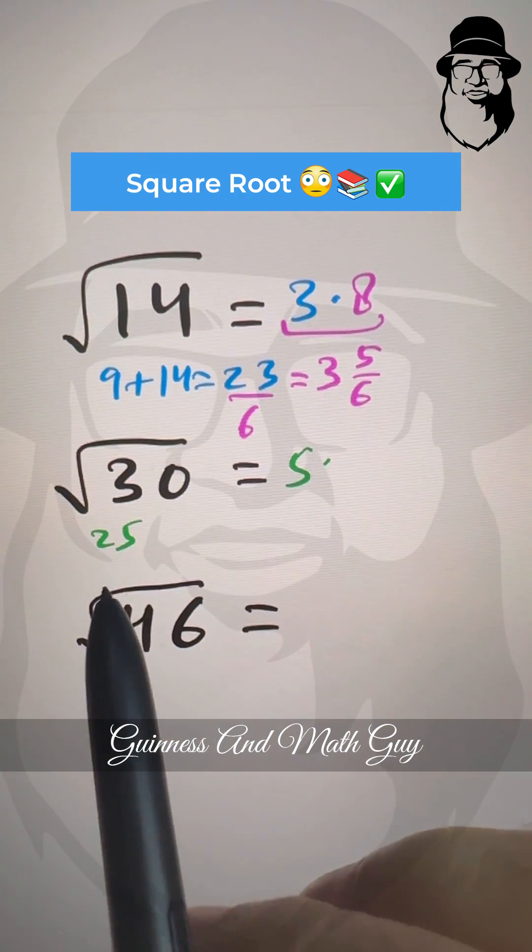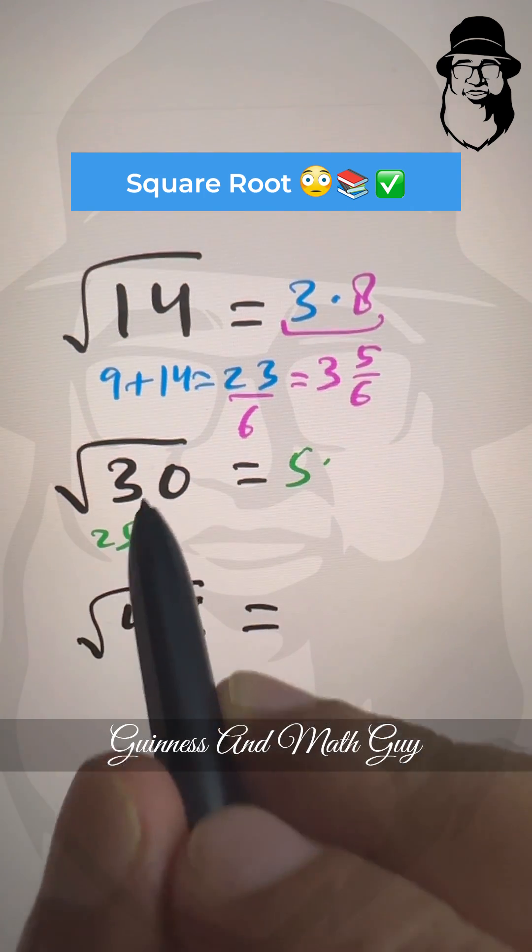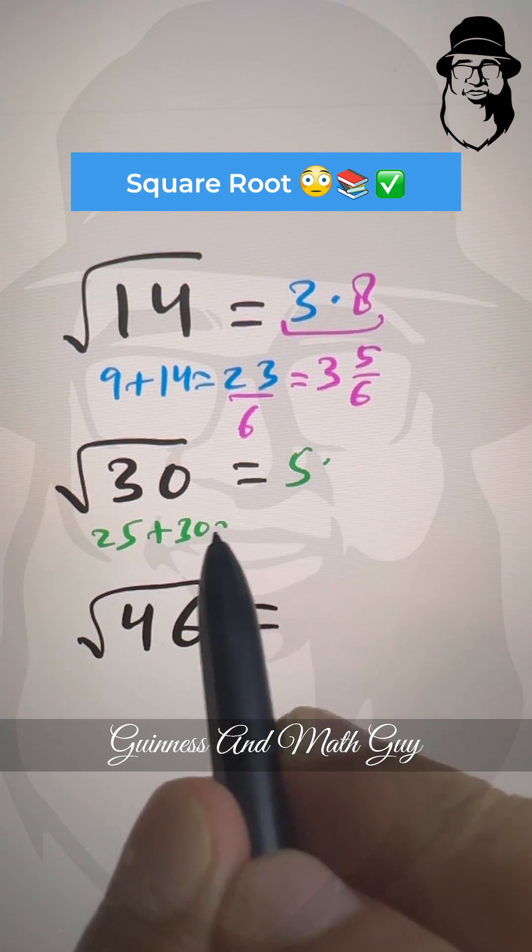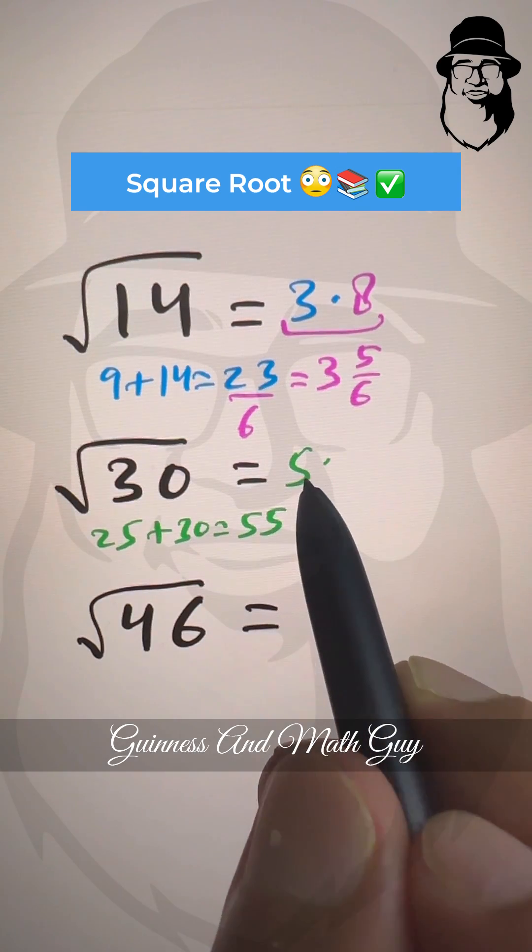The perfect number that is below 30 is 25. So 25 plus this 30 is 55. And we divide it by double of this number, double of 5 is 10.